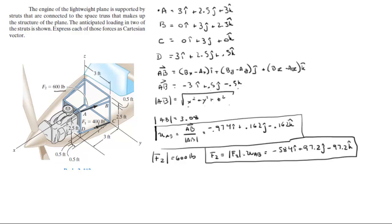If you look at it by symmetry, you can get F1 — all you have to do is flip the values if you want to be smart about it. By symmetry, F1 is going to be going toward the positive x instead of negative x. But since the force is 400 instead of 600, we actually have to calculate it. So let's find vector CD.